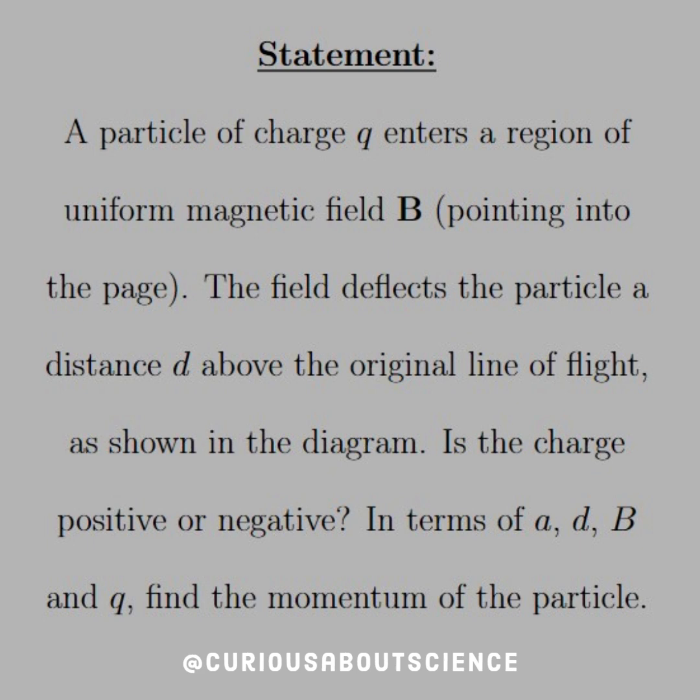Our statement today reads: a particle of charge Q enters a region of uniform magnetic field B pointing into the page. The field deflects the particle a distance D above the original line of flight, as shown in the diagram. Is the charge positive or negative? In terms of A, D, B, and Q, find the momentum of the particle.